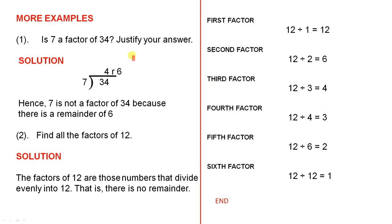More examples. Is 7 a factor of 34? Justify your answer. Solution: 7 divided into 34 goes 4 with a remainder of 6. Hence, 7 is not a factor of 34 because there is a remainder of 6.